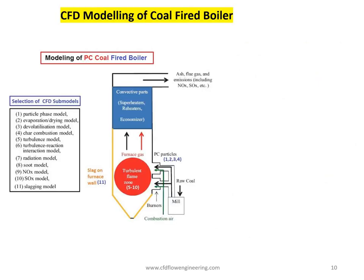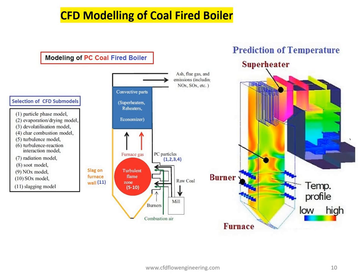Another example is modeling of a coal-fired boiler, an important part of power plant industry. Many physical and chemical processes are involved. We select the CFD model based on mathematics, physics, and chemistry. The physics can include particle phase models, drying, devolatilization, char combustion, turbulence, turbulence-chemistry interaction, radiation heat transfer, and formation of NOx, SOx, and slagging due to ash. As per the physics, different mathematical models are developed, numerically implemented in the CFD solver, solved over the domain, and results are validated with experimental data to get credibility.